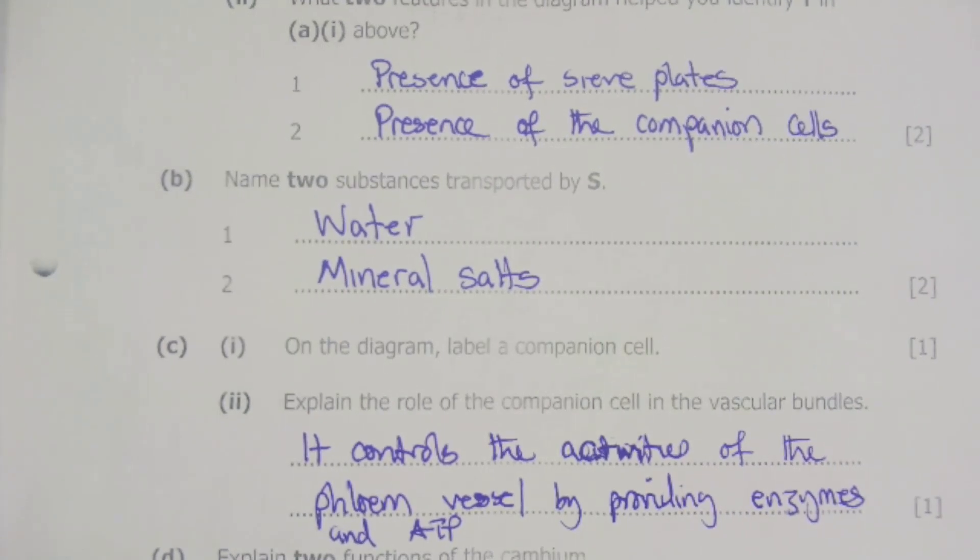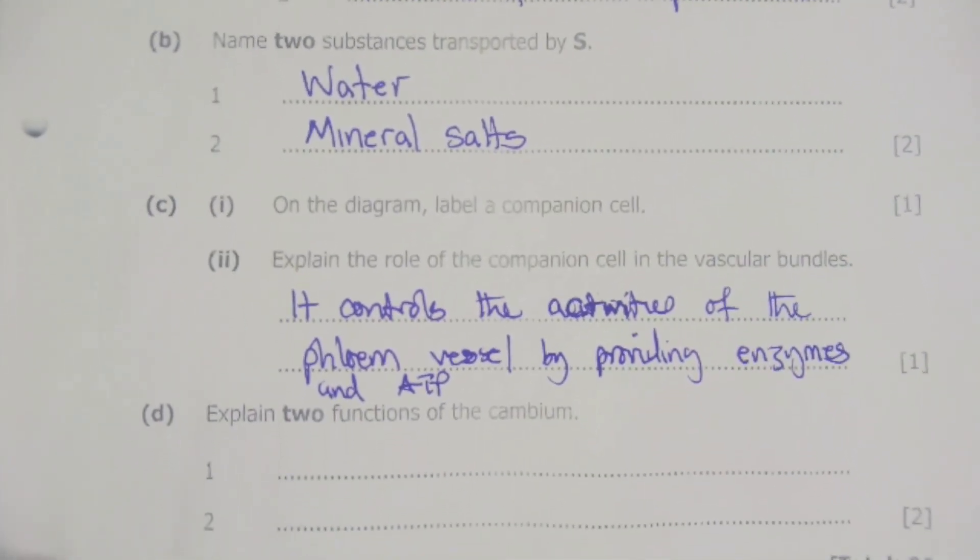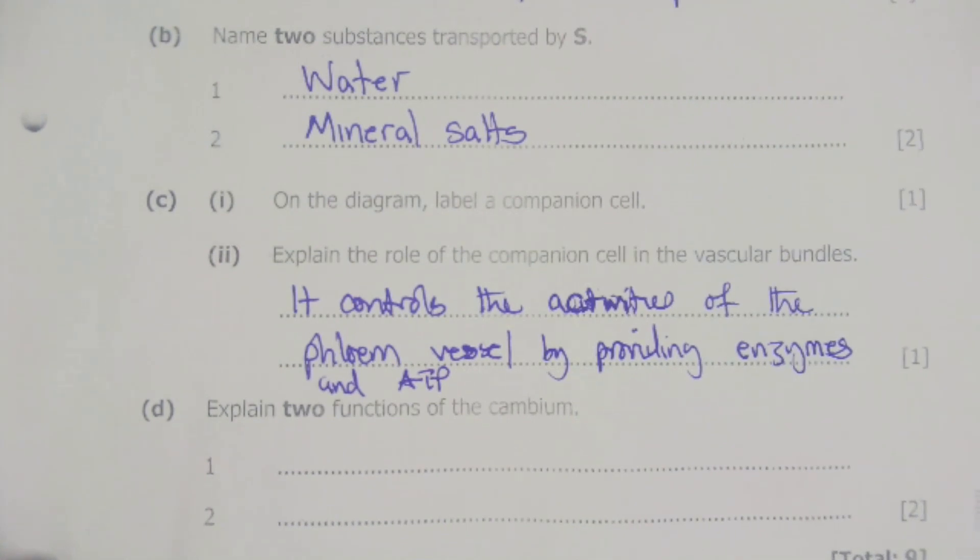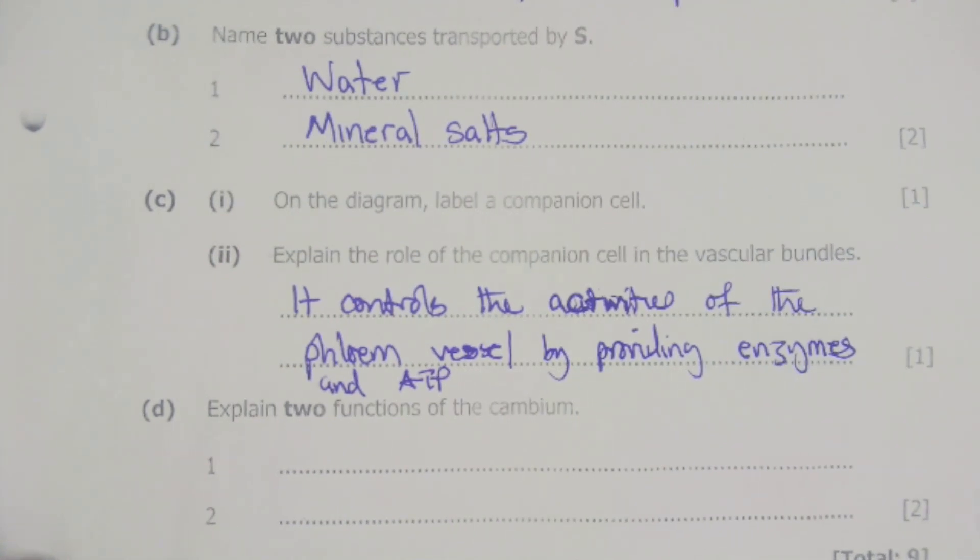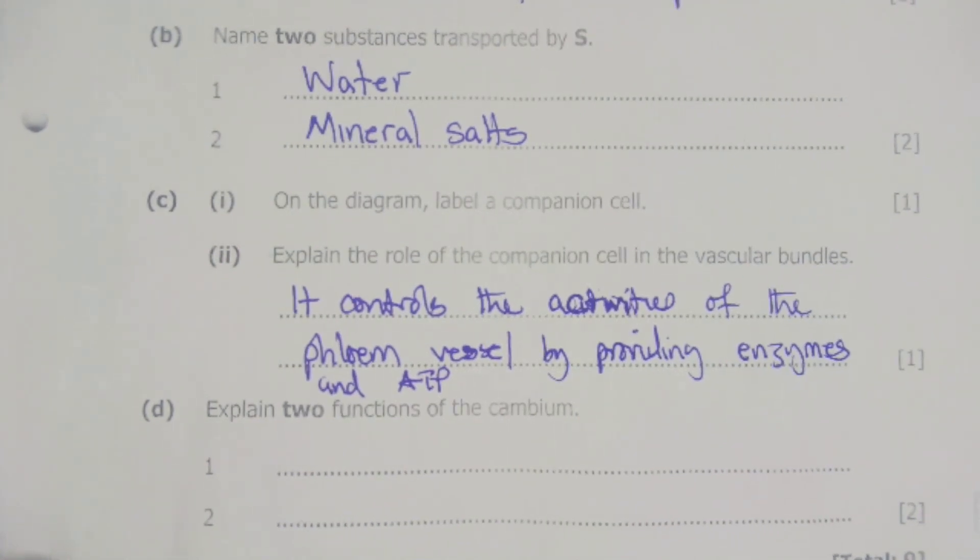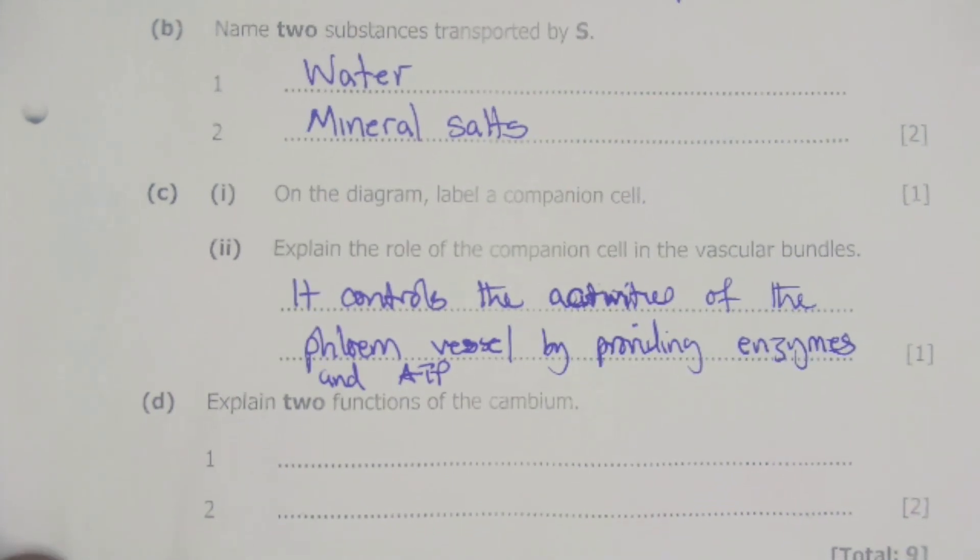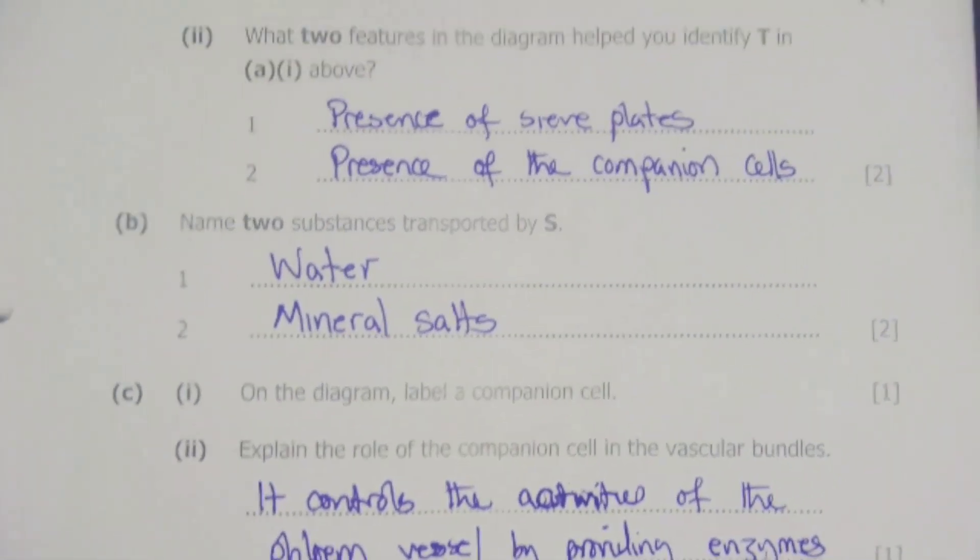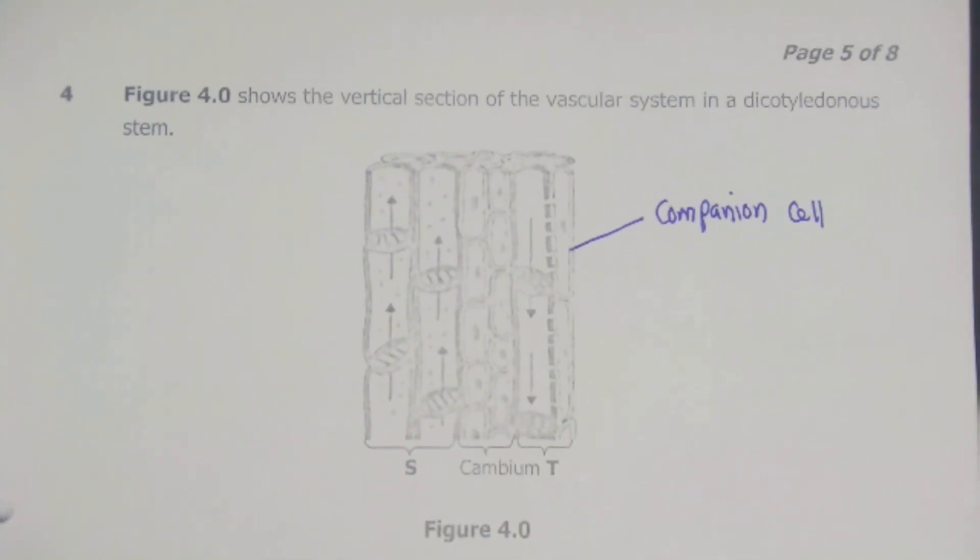Then we can now move on to the next question, which is question number D. And D is asking us to explain two functions of the cambium. So the cambium, in our structure here, we can see it's at the middle of the S and T, which is the xylem and phloem, respectively.